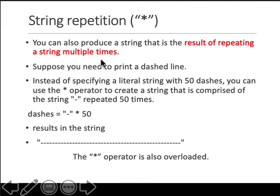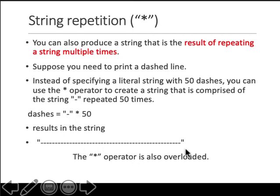If you want to repeat a certain character a number of times, you use the star operator or the asterisk. So if you want to print a number of dashes, you create a single dash times 50 and it will repeat it 50 times.